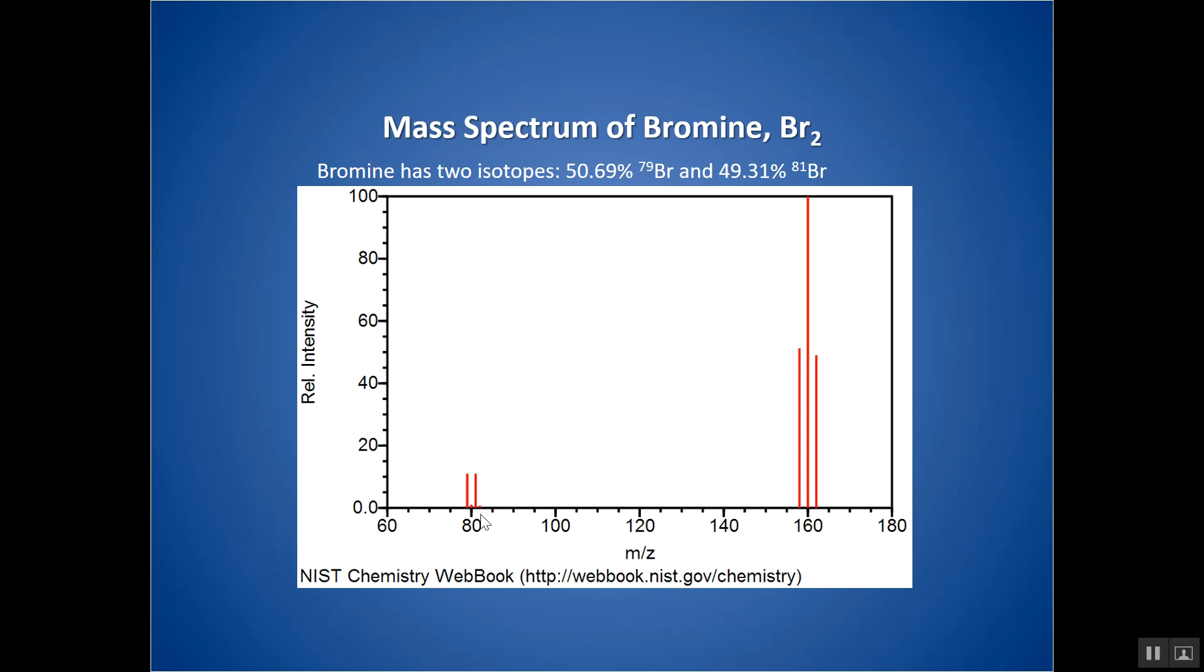So essentially I could say these are the molecules. It makes sense that at around 160, I have a diatomic BR but it would be composed of BR 79 and a BR 81 which adds up to 160. Here I would have two BRs bonded together but they both be BR 79s and that's why it would add up to 158. And this is where I'd have two BRs but they both be 81 and that's why they add up to 162.